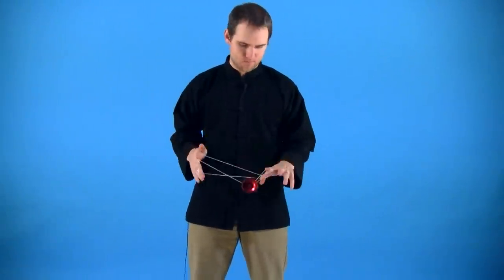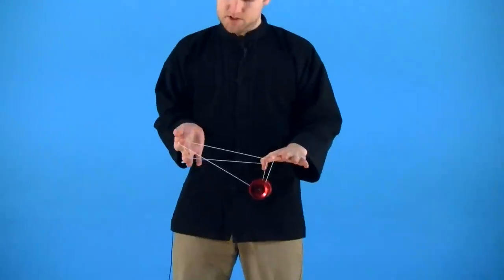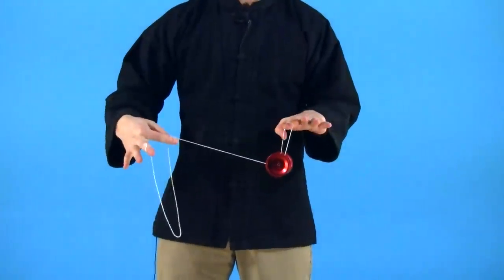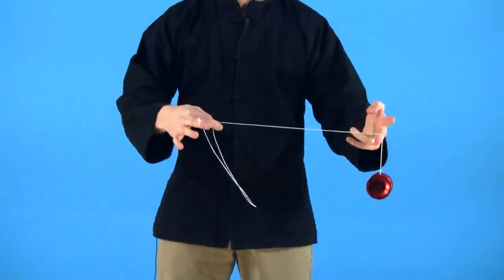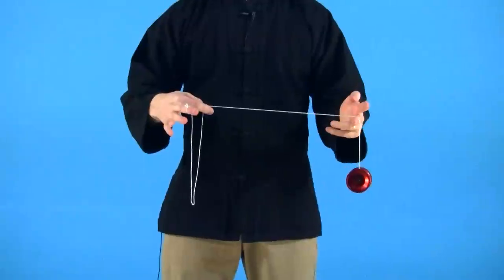So to do this trick, you're going to start off in a Houdini mount. And what you're going to do is you're going to pinch with your throw hand, dropping the slack of the string, and you're going to dismount your opposite hand over your middle finger.